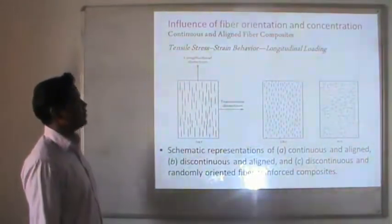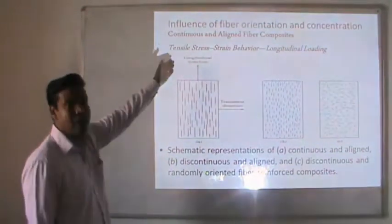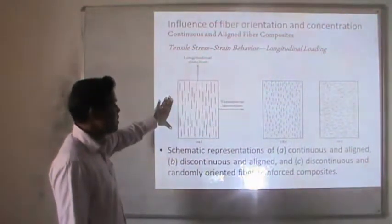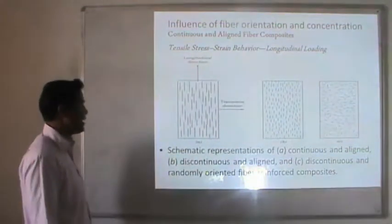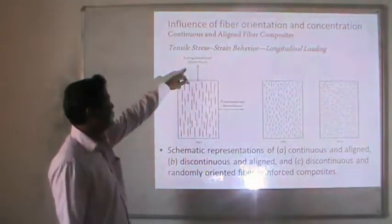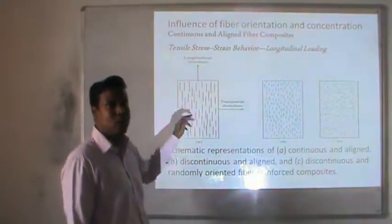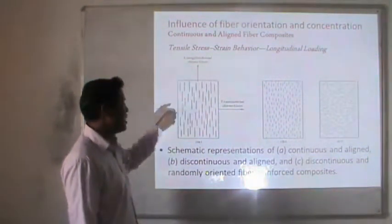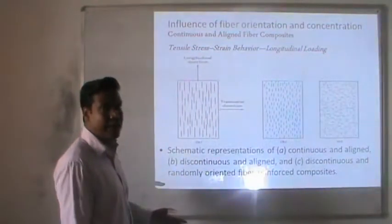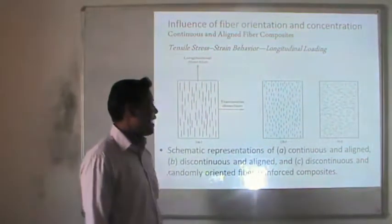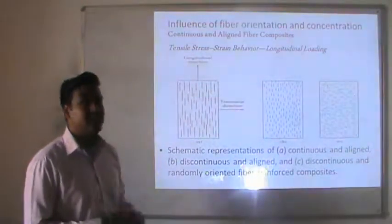Influence of fiber orientation and concentration: for continuous fiber composites under tensile loading in the longitudinal direction, three cases are shown — first, continuous and aligned fibers; second, discontinuous and aligned fibers; and third, discontinuous and randomly oriented fibers. For each case, load is first applied in the longitudinal direction, then in the transverse direction, showing how orientation significantly affects composite tensile strength.